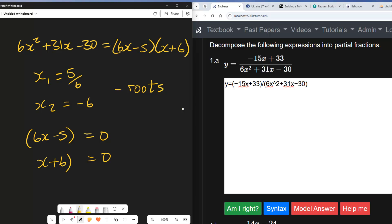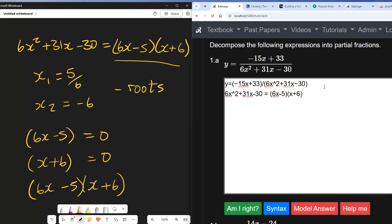So the factors of this equation are (6x - 5)(x + 6), which is exactly what we got previously. So that's two different ways of factorizing a quadratic. 6x² + 31x - 30 is equal to (6x - 5)(x + 6).